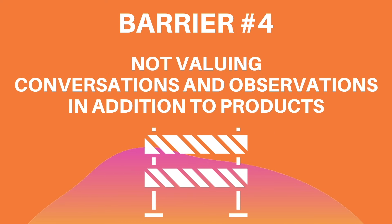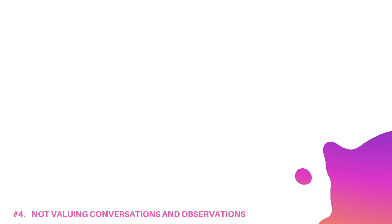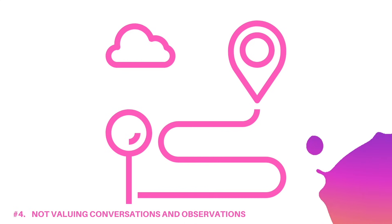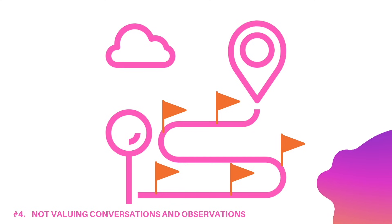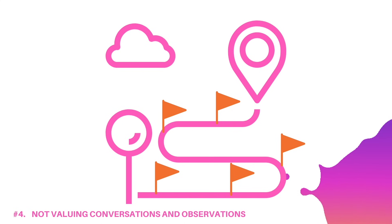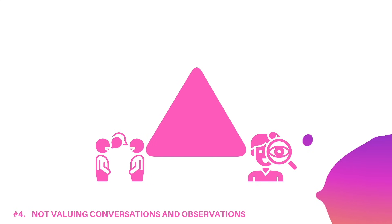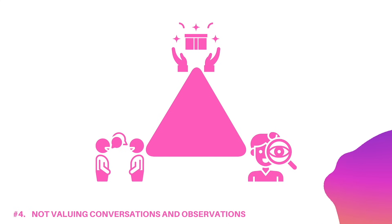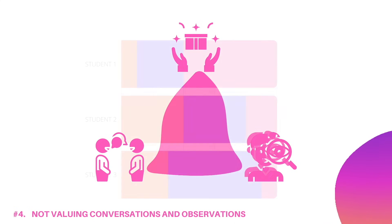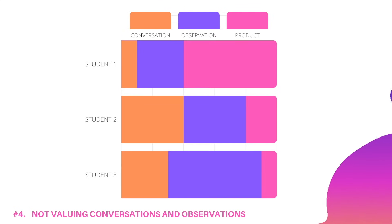Barrier number four: not valuing conversations and observations in addition to products within a body of evidence. Just as we plan for instruction, we need to plan for assessment. When we know what we are looking for, we can plan opportunities for students to demonstrate where they are in relation to the learning goals. We often talk about triangulating conversations, observations, and products to ascertain students' strengths and next steps.